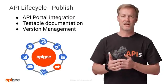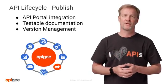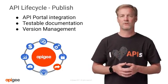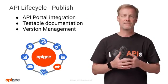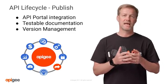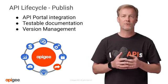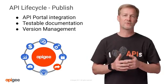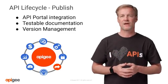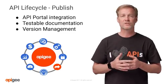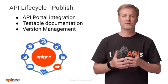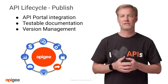So now you have your API designed, developed, and secure — time to get it published for use by developers via an API portal. Apigee offers API portal integration into already established company portals or using the Apigee API portal. API portals provide an entry point for developers to discover your APIs, view documentation, gain access, and test their applications. It also supports having multiple versions of an API published as your API program matures and API proxies change to meet developer needs.